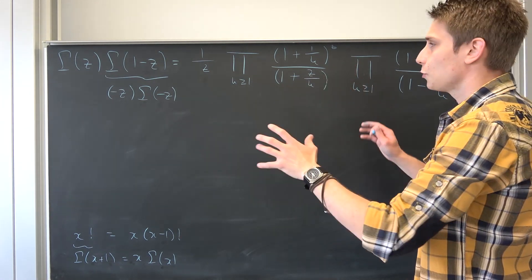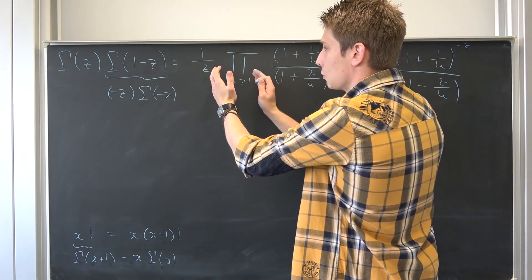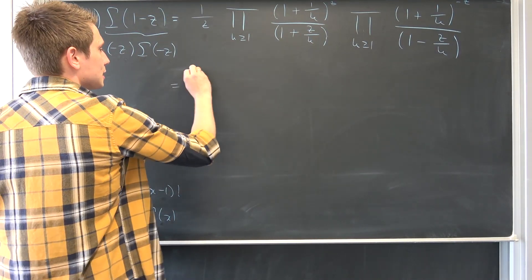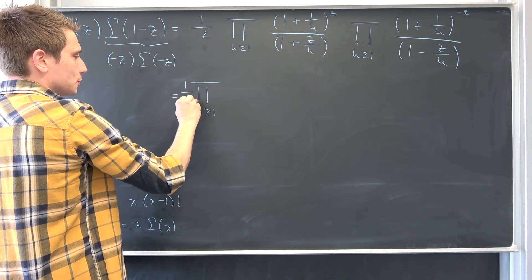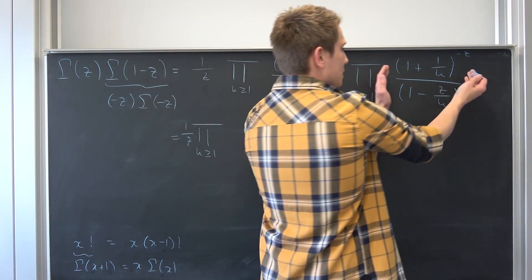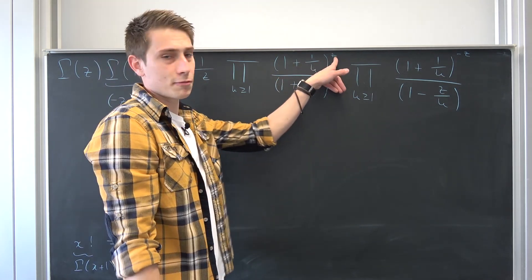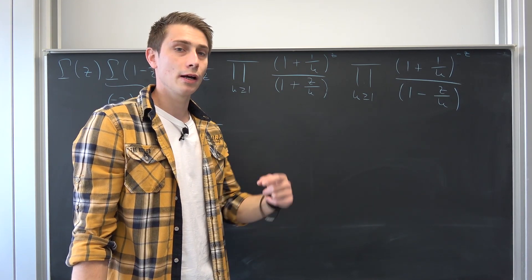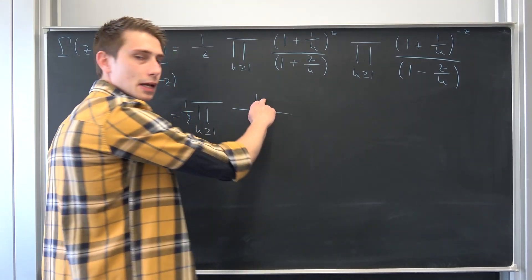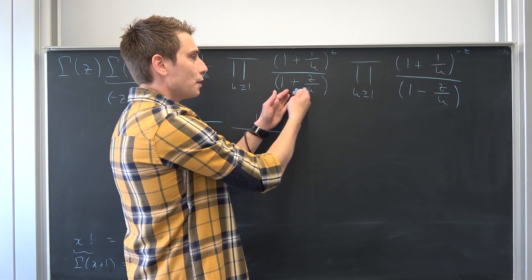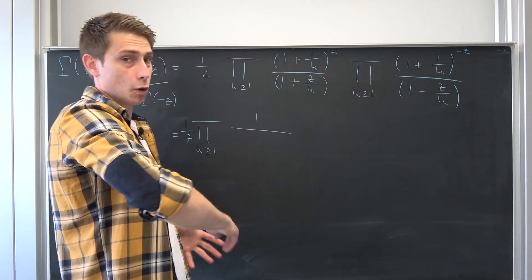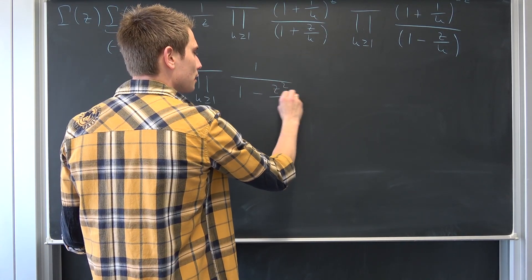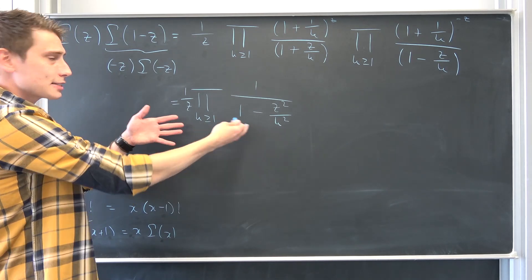Without further restrictions, let's collect all the terms and bring the pi notation completely to the front. We have 1 over z, then we multiply the two arguments together: (1+1/k)^z times (1+1/k)^{-z} gives (1+1/k)^0 = 1, so the numerator cancels. In the denominator, (1 + z/k)(1 - z/k) = 1 - z²/k², a simple difference of two squares.